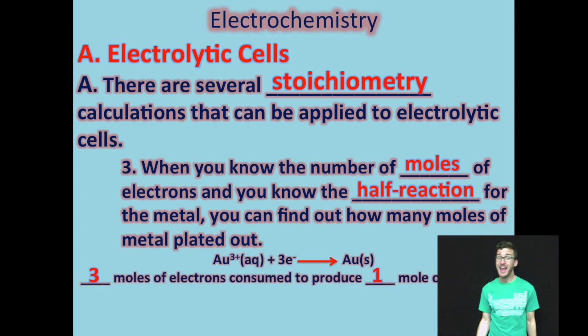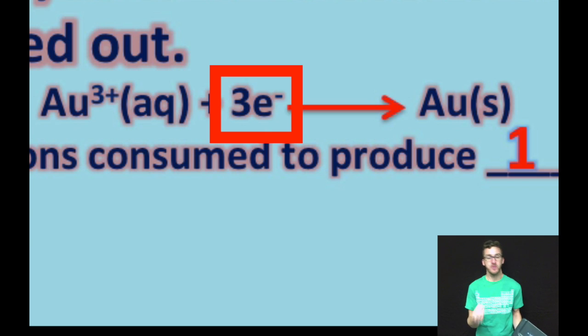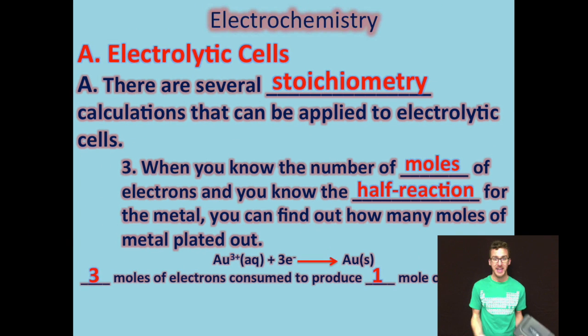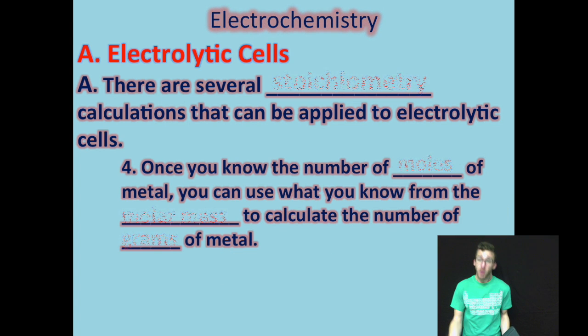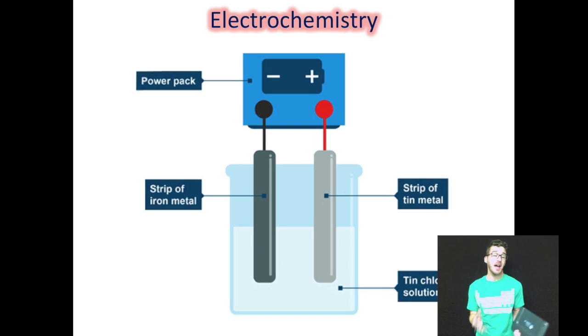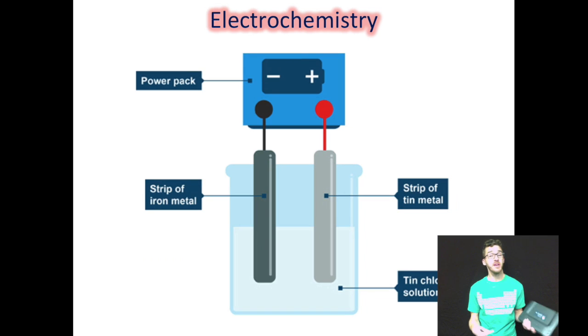Now, once you know the number of moles of electrons and you know the half reaction for the metal that you're working with in your electrolytic cell, you can find out how many moles of your metal have plated out. So as you look at the example that is given to you in your notes and on your screen there, we're looking at the reduction half reaction for gold. In the half reaction, we know that for every three moles of electrons consumed or gained by every one mole of gold ion, we're going to get one mole of solid gold. So as we're working through some of these examples, if we were to say be working with gold, if we don't get three moles of electrons transferred, we're not going to get one mole of solid gold plated out. And then once you know number of moles of your metal, you can then use what you know from the idea of molar mass to calculate the number of grams of metal. This is going to be important then in some of those applications of electrolytic cells that we talked about earlier. We can determine how much metal is going to plate out in an electroplating process, for example, or a refining process.